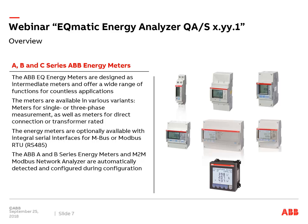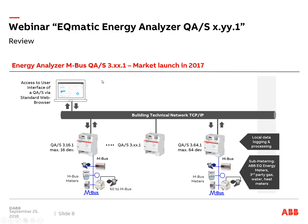ABB has a wide range of meters — single phase or three phase, direct connection or transformer connection. These devices are available with a serial interface which can be used for MBUS or Modbus. Our A and B series can be connected to our Energy Analyzer QAS. Also new: the so-called Modbus network analyzer M2M can also be connected to the EQS Energy Analyzer. The overview from last year shows our first energy analyzer MBUS, QAS3. '3' means it's a typical MBUS energy analyzer, and '2x' means it can handle 16 or 64 MBUS slaves.